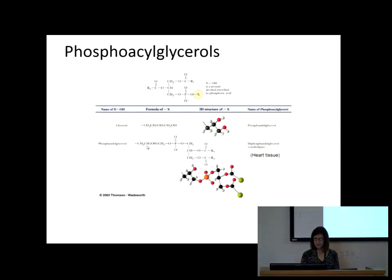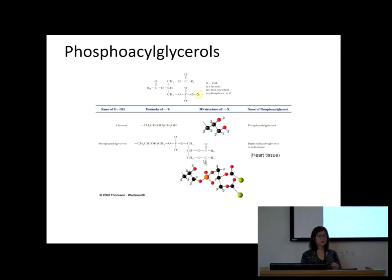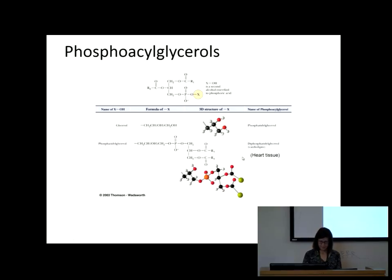Here's a couple more complex structures. This bridging molecule has two fatty acids, a phosphate, a linking group, another phosphate, and another glycerol molecule with two more lipid tails. I'm not going to ask you to remember this — I just want you to appreciate how crazy it can get. This is cardiolipin, found in heart tissue — it's essentially the fat in heart tissue.